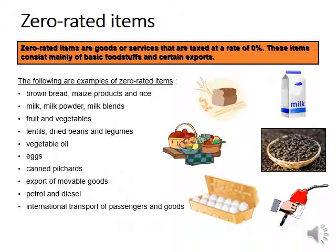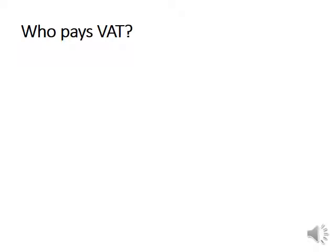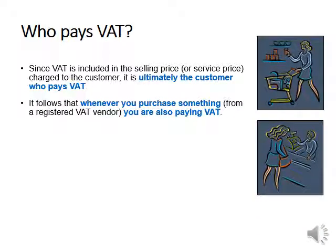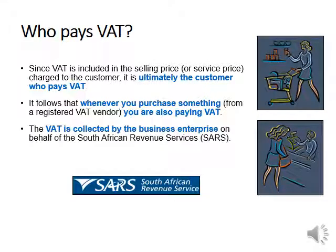An example of a zero-rated item is international transport of passengers and goods. Now, who pays VAT? Since VAT is included in the selling price or service price charged to the customer, it is ultimately the customer who pays the VAT. Whenever you purchase something from a registered VAT vendor, you are paying VAT. The VAT is collected by the business enterprise on behalf of the South African Revenue Services — in short, SARS.